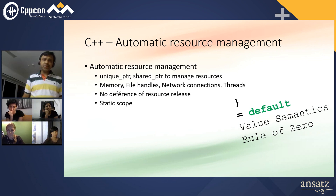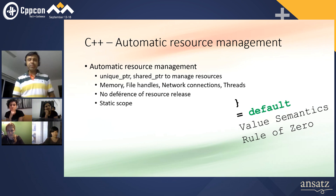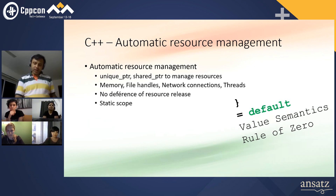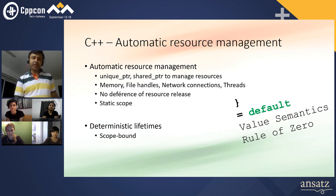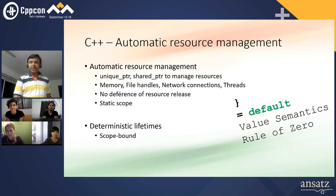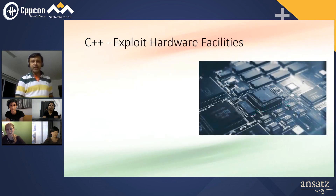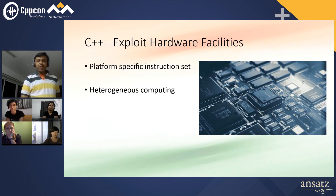Automatic resource management — we have our favorite closing brace, unique pointer, shared pointer. Name a resource and it can be managed pretty well and in a deterministic fashion: you know when the cleanup happens, no waiting for garbage to collect. And so we have value semantics; the rule of zero helps you get there.